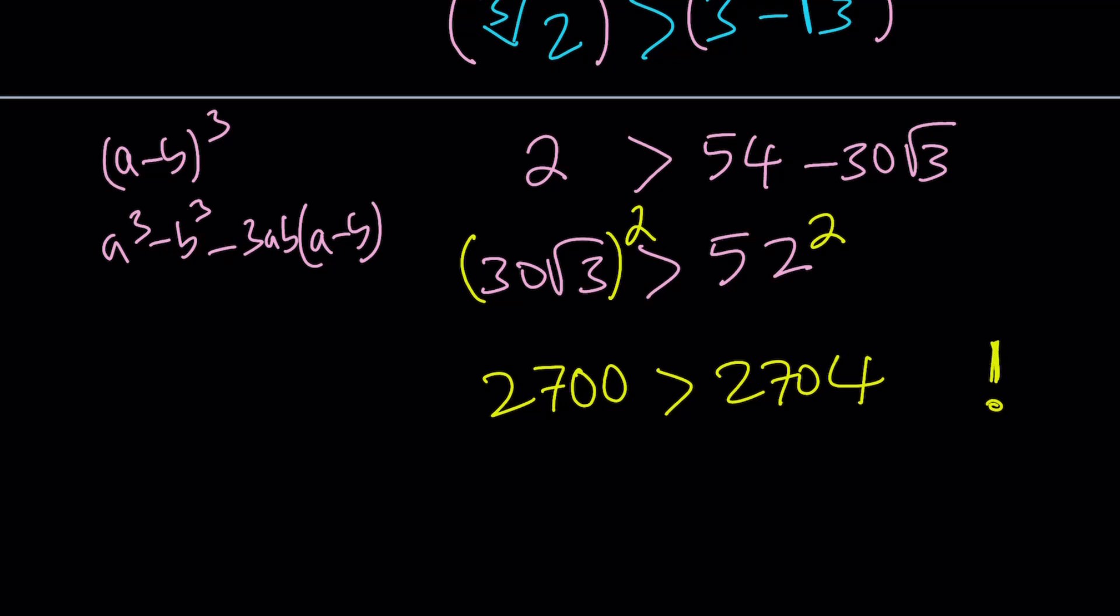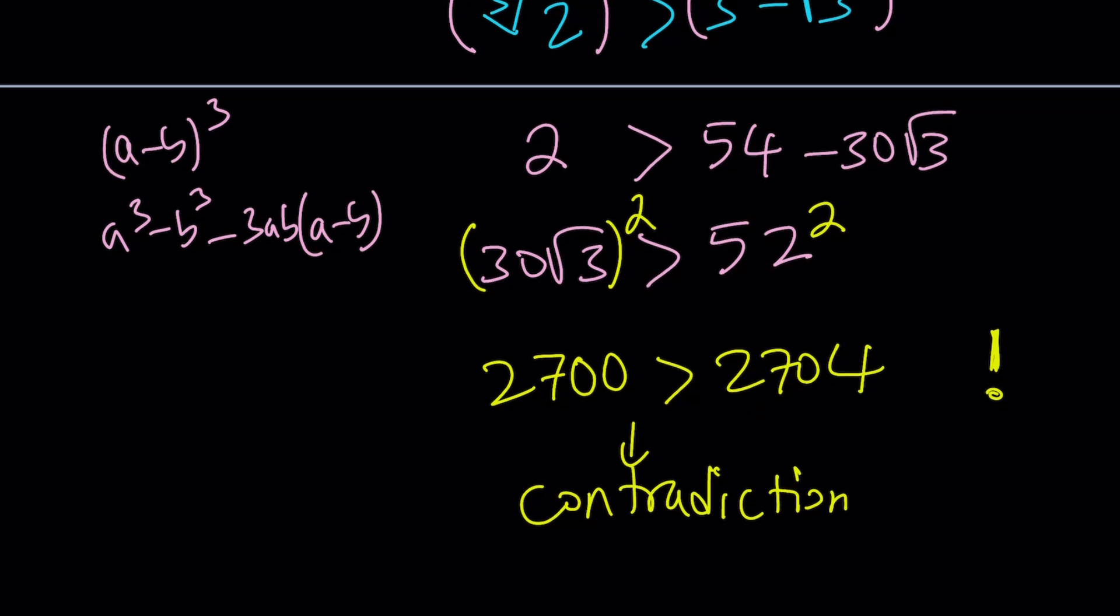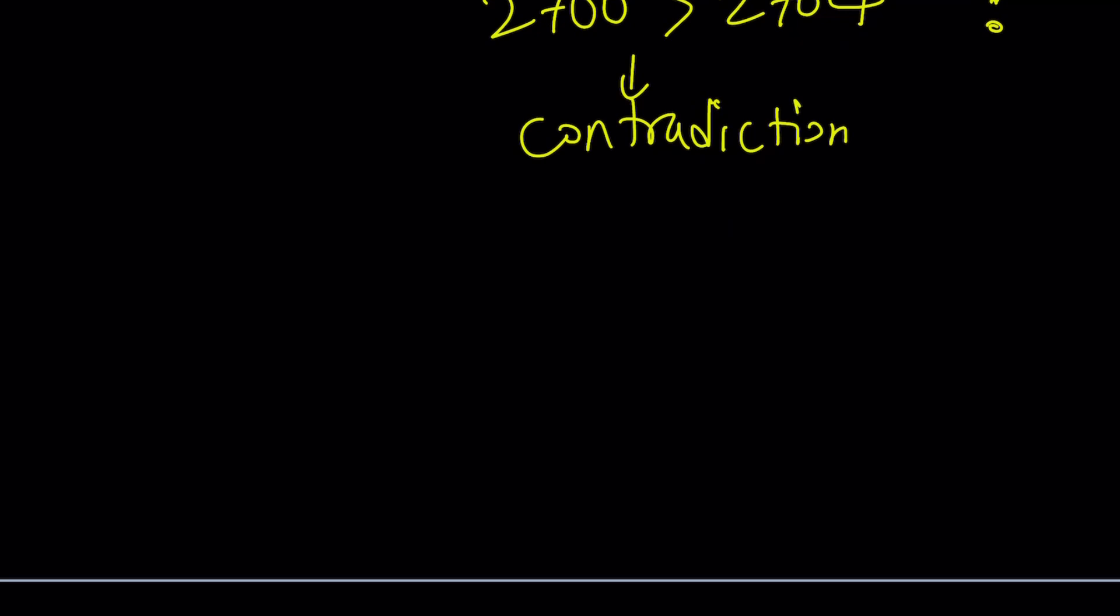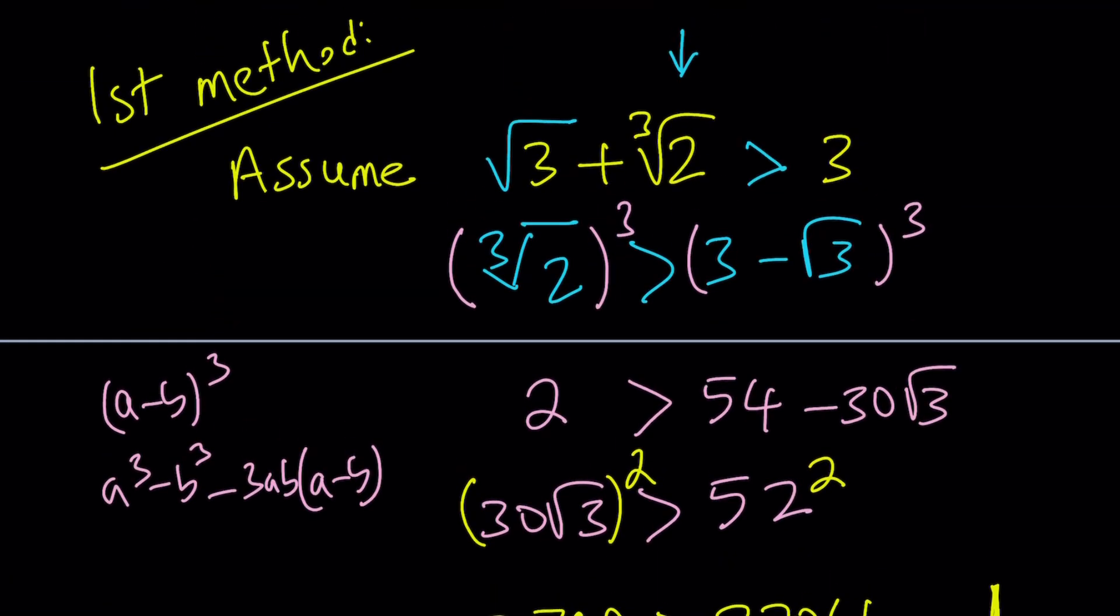That's not good. This is false. Obviously, we arrive at a contradiction because 2,700 is not greater than 2,704. So, what does that mean? That means our initial assumption is false.